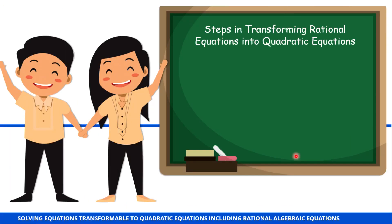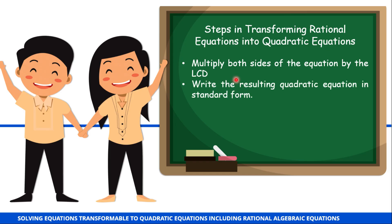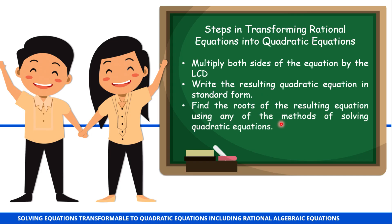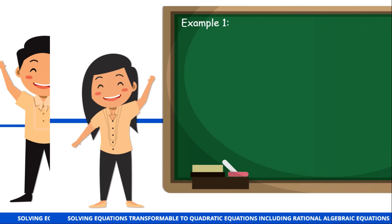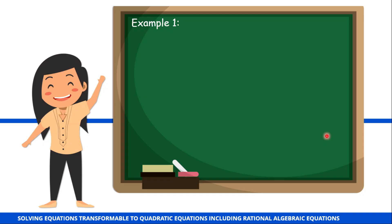Here are the steps in transforming rational equations into quadratic equations. First, multiply both sides of the equation by the least common denominator. Second, write the resulting quadratic equation in standard form. Then we have to solve for the roots of the equation. And of course, we have to check the obtained values of x. Let's now proceed to our example.